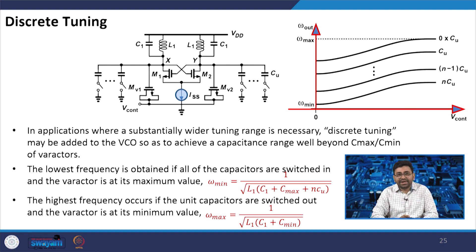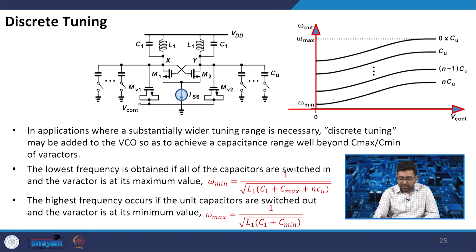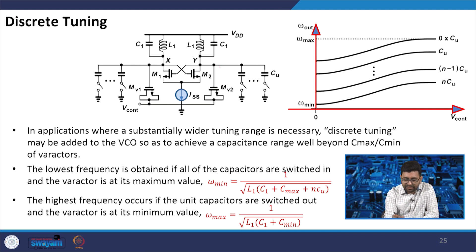Since the circuit cannot achieve sufficient tuning range, we can use discrete tuning to improve it. In discrete tuning, we place additional capacitors: one is used for fine tuning — because it has a smaller variation — and another is used for coarse tuning.